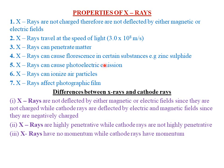The sixth property of X-rays is that X-rays can ionize air particles — that is, they can cause the air particles to acquire negative and positive charges. The seventh property of X-rays is that X-rays affect photographic film, such that when X-rays are made incident on photographic films, they can cause those films to blacken or change some of their properties.